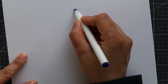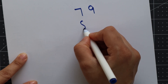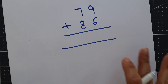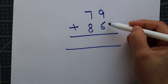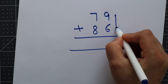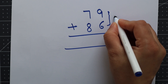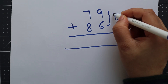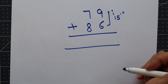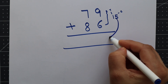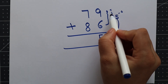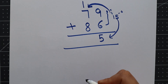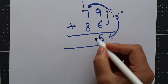Let's say we have 79 plus 86. Again, we add the ones place digits first — 9 plus 6 is 15. Again, 5 is at the ones place and 1 is at the tens place. So the 5 will come at the ones place here, and the 1 will carry forward. So the answer works out — 1 comes here and we get 16 at the tens place.